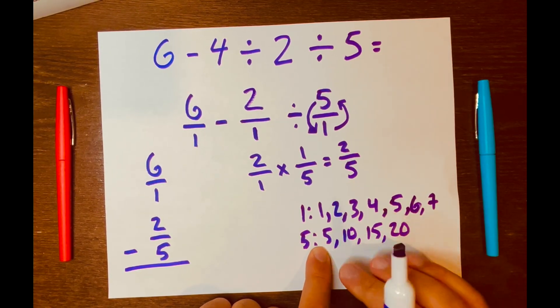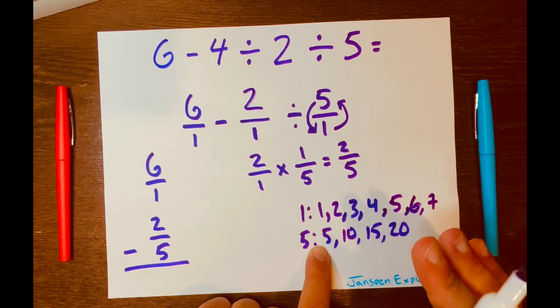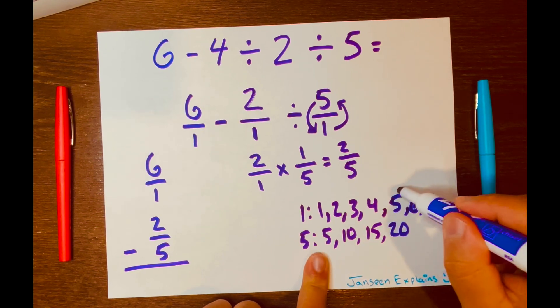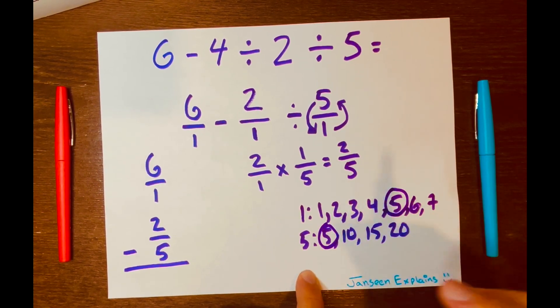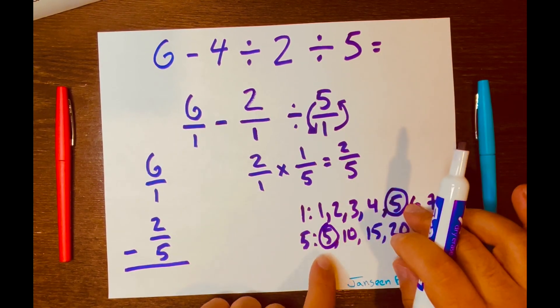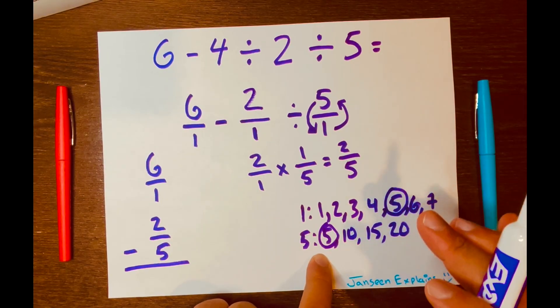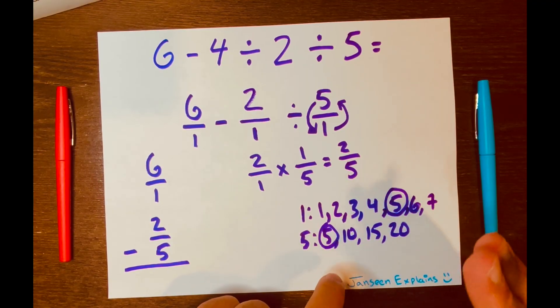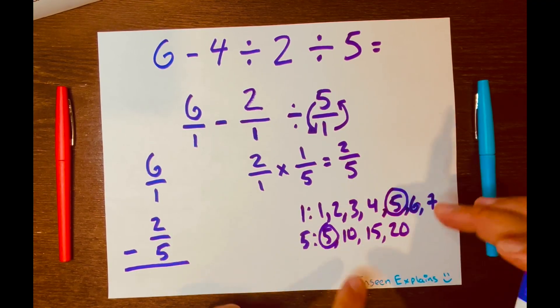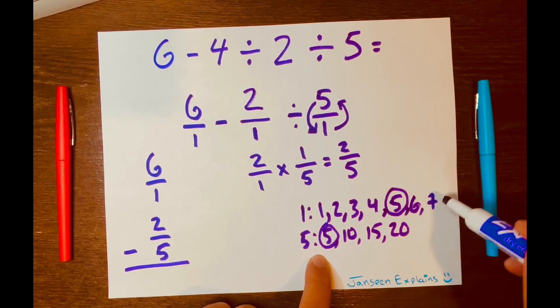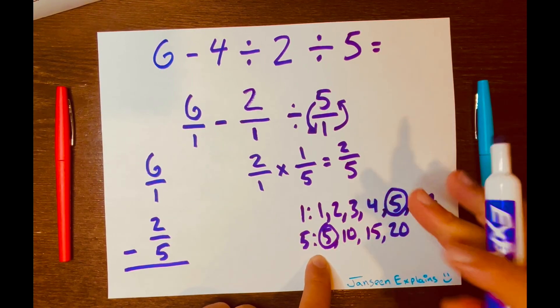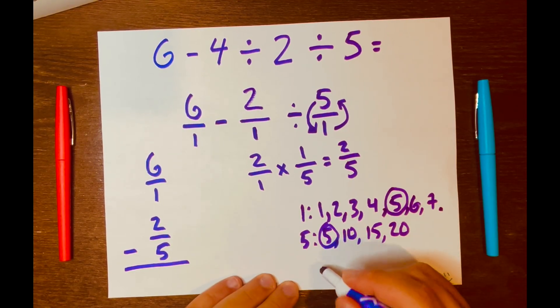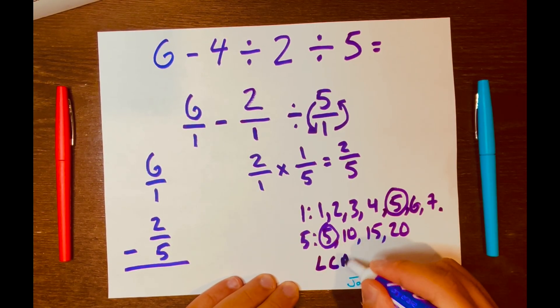So that's what I mean. You want to look for the smallest number that appears on both lists. So 5 and 5 appears on both lists. Now, if you don't see it, then just keep listing multiples till you find the smallest number that appears on both lists. But I just stopped there because I found it: 5 and 5. They both appear on both lists. So that'll be your least common multiple.